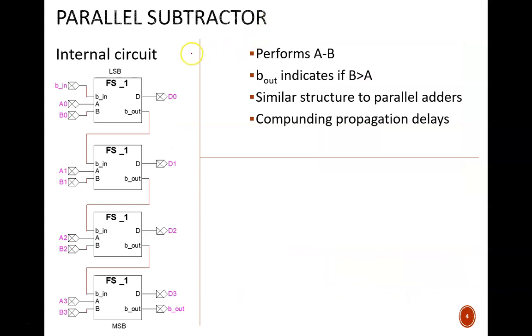With a full subtractor made and converted into a device symbol, we can then build a parallel subtractor. We need one full subtractor for each bit of the input numbers. Then, we link the borrow out from each less significant bit as the borrow in to each more significant bit. Again, note the similarities to the pattern we used for the parallel adder. It is nice to see a familiar pattern, but the same drawback exists with compounding propagation delays.